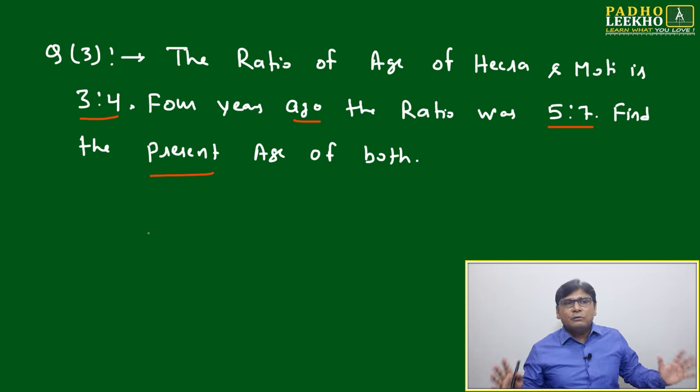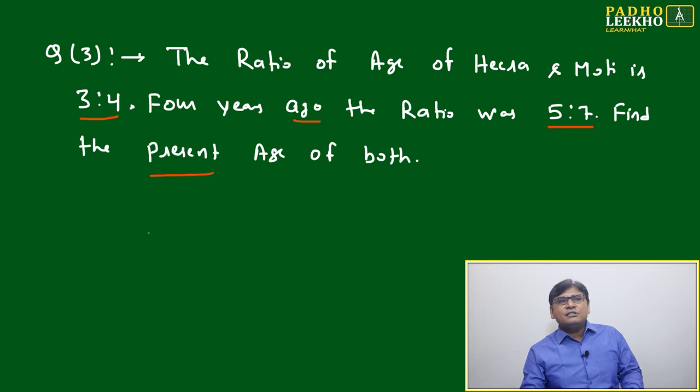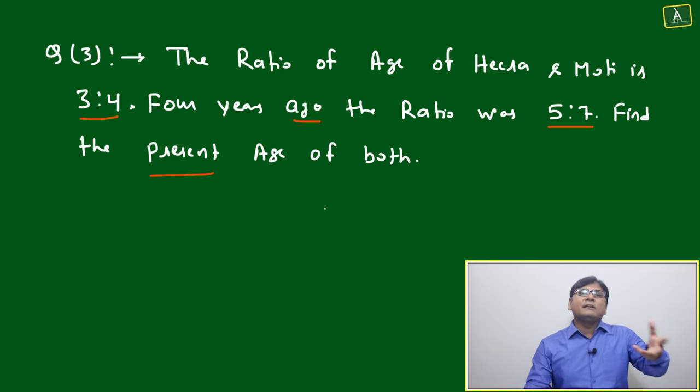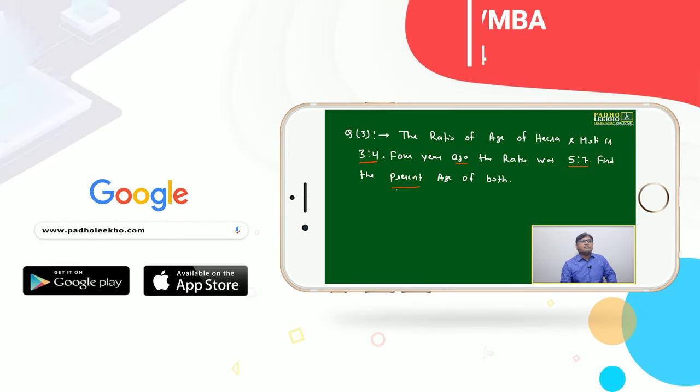But this question, you are feeling some data is missing or some data has been given already. Both of the cases, the ratio of the age of Hira and Moti is given, 3 ratio 4. Age ratio already given, 3 ratio 4, and they're asking percentage. Means it will be, this is only percentage.